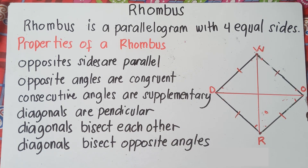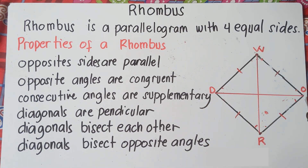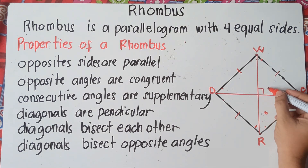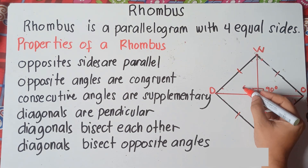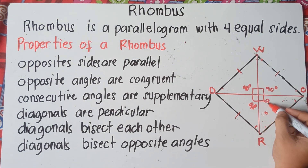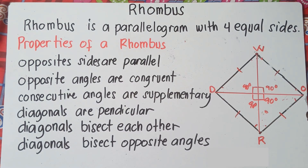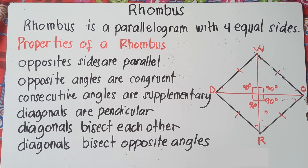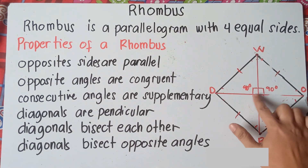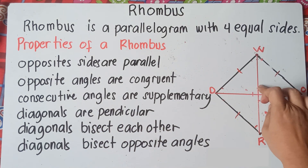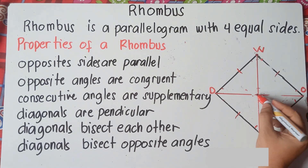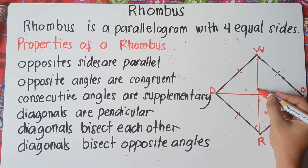Perpendicular means they form a 90-degree angle. So diagonal DO and diagonal WR bisect each other and form 90-degree right angles at the intersection. All four angles formed at the intersection should each be 90 degrees. Diagonals are perpendicular means they intersect and form 90-degree right angles.